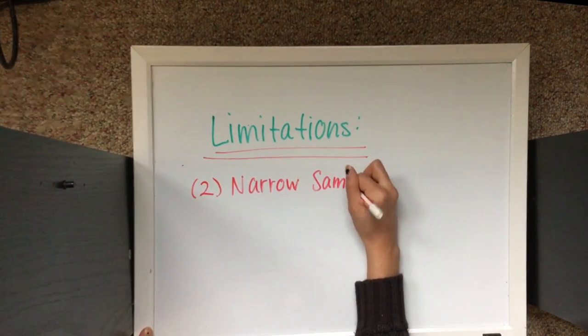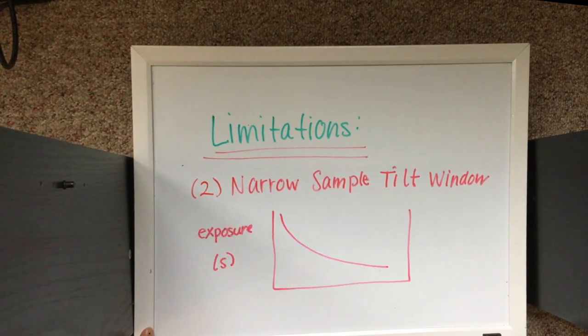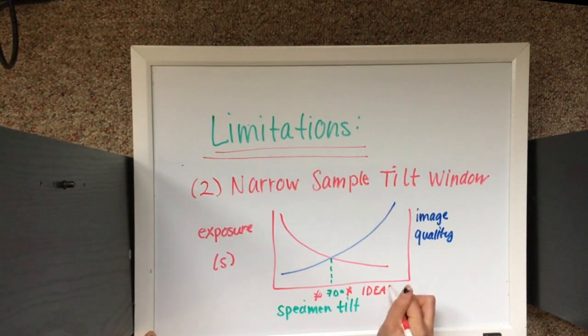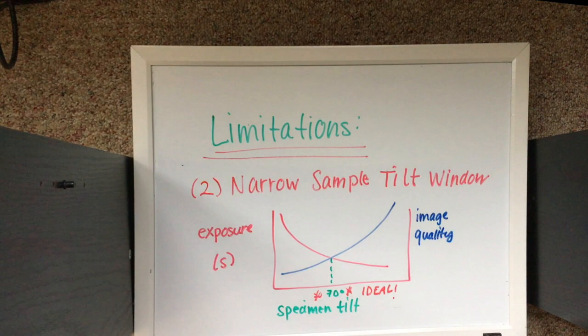In addition, there is a very narrow window where the sample tilt is ideal for generating an image with high quality. As the sample tilt increases, the image quality increases only if the exposure time also decreases.